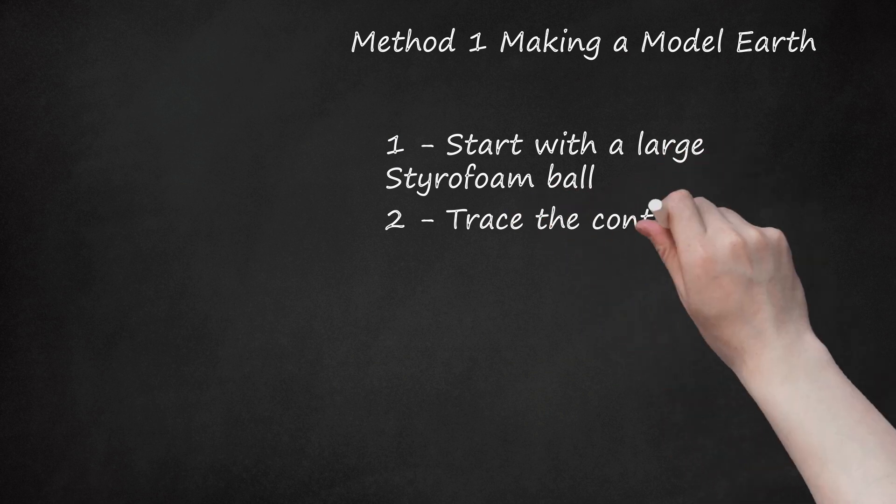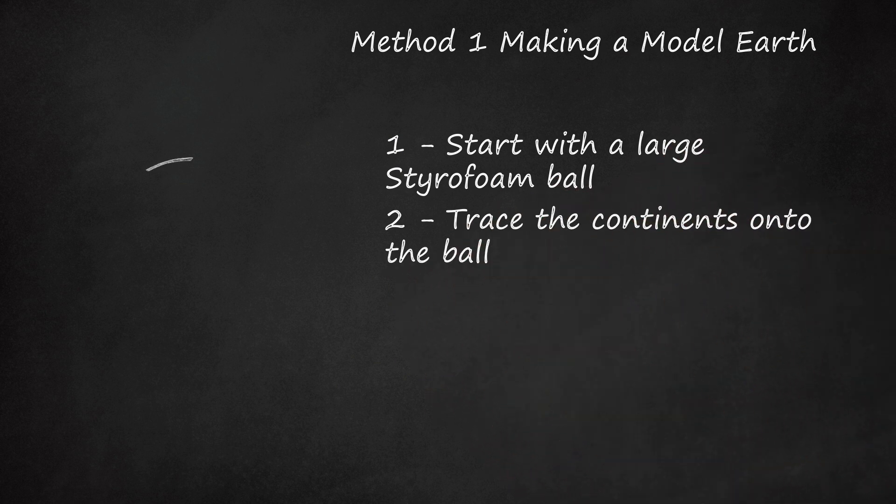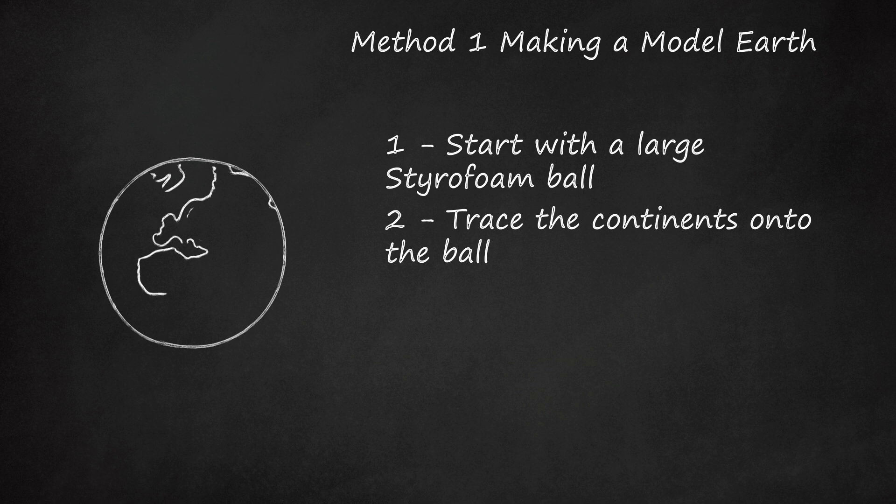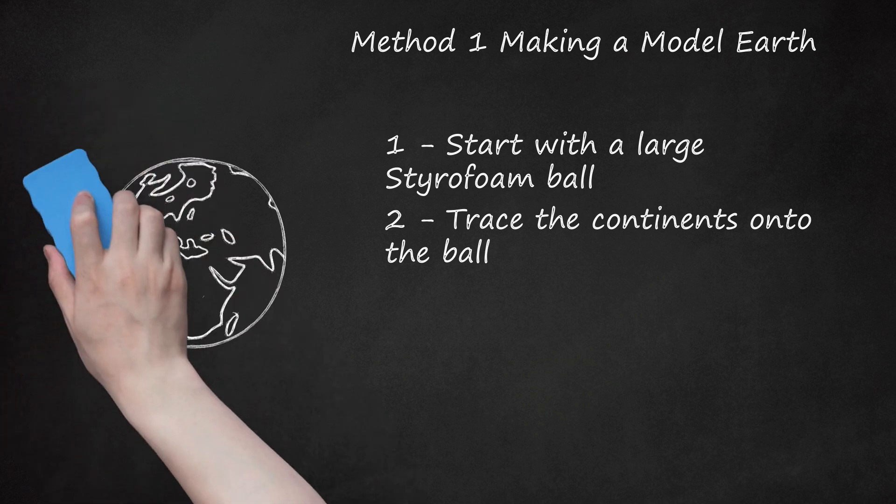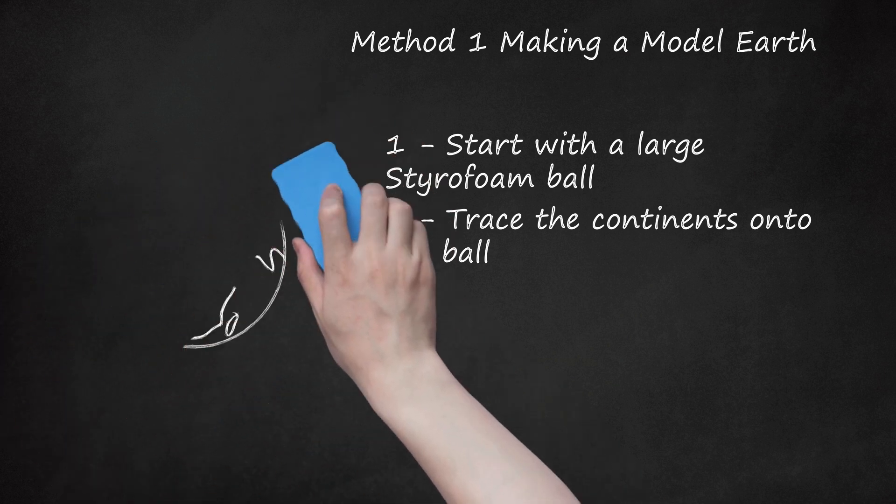Step 2: Trace the continents onto the ball. Draw an outline of the continents onto your ball. The easiest way to do this is to find a map of the globe online and print it out. Cut out the continents and tape them onto your globe. Draw the outlines with a pen, then take off the continents. You might need to change the size of the printing until it looks right.